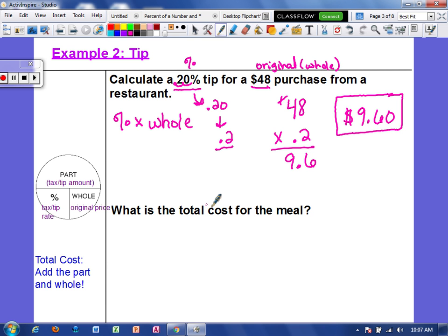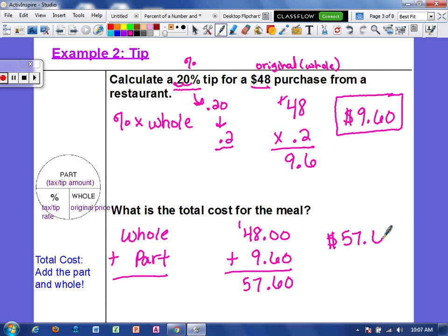So now we want to find the total cost for this meal. That means we have to take the original price, which is the whole, and we have to add the part, which is the amount of tip. So originally it cost $48 for the meal. Then we're going to add on the $9.60 tip. So this total meal would cost $57.60.